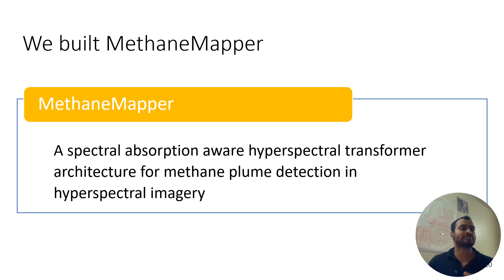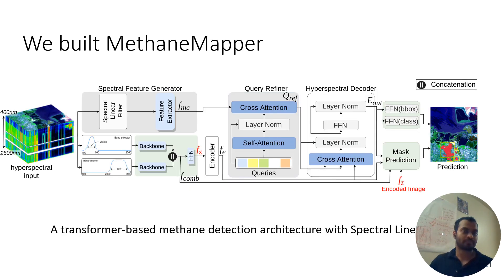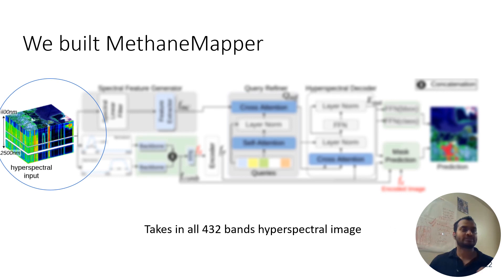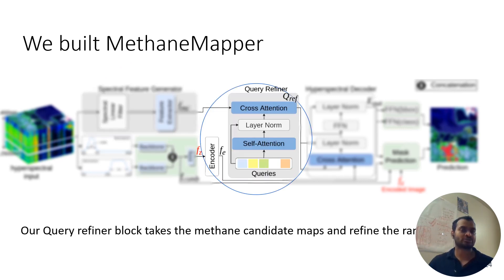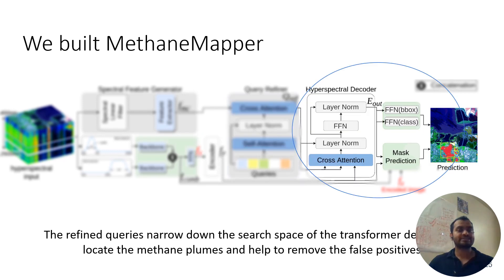It is a spectral absorption-aware hyperspectral transformer architecture. This is our end-to-end pipeline. The data flow is from left to right. We start with an input hyperspectral data cube, which is processed by our spectral feature generator. It generates a methane candidate map. Those methane candidate maps are passed to our query refiner module, which cross-attends the methane candidate maps with random queries to generate refined queries. These refined queries are passed onto our decoder, and they reduce the search space of our transformer decoder to locate methane plumes and help remove false positives.